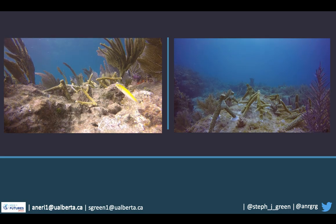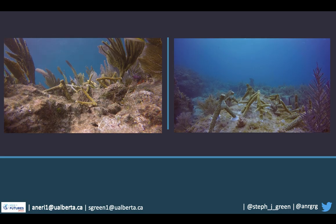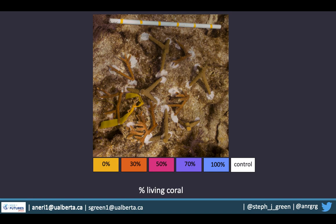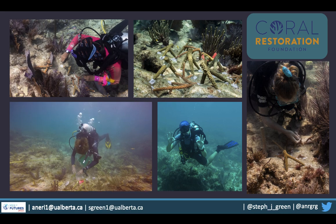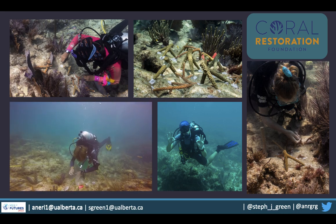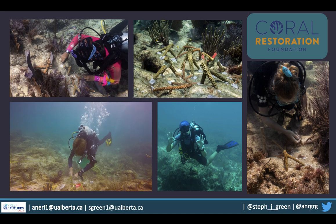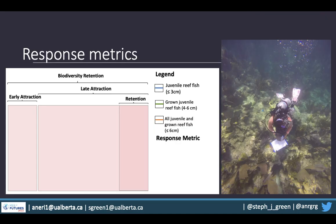She designed an outplanting experiment that manipulated where and in what proportion live coral outplants were placed in relation to her artificial mimics. Each cluster of corals varied in the proportion of live coral fragments to artificial, going from 0% live cover to 100%, with control plots where no corals of any kind were outplanted. Each plot had 10 corals, and we closely monitored those corals over time, measuring a range of different response metrics.